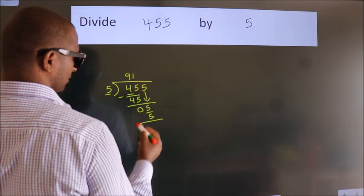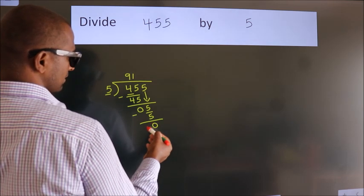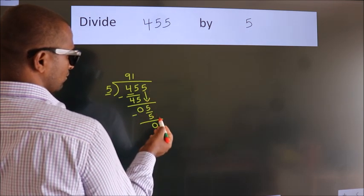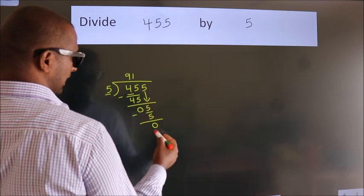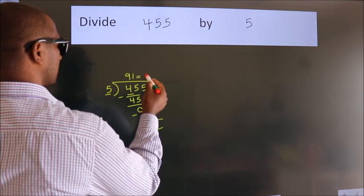Now we subtract. We get 0. After this, no more numbers to bring it down. And we got remainder 0. So, this is our quotient.